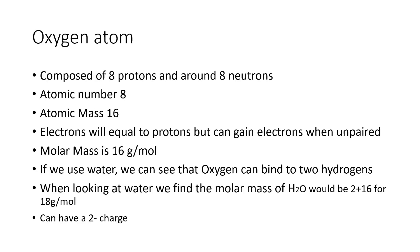There are other chemical elements important to know. One of them is oxygen. The oxygen atom has 8 protons and around 8 neutrons — though different isotopes can have different numbers. With 8 protons and 8 neutrons, oxygen has an atomic mass of 16.